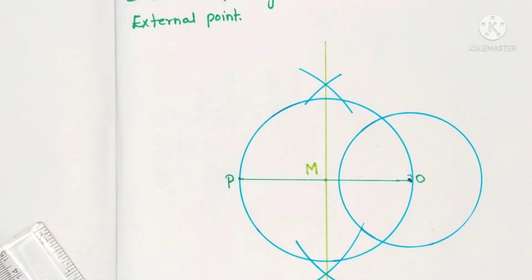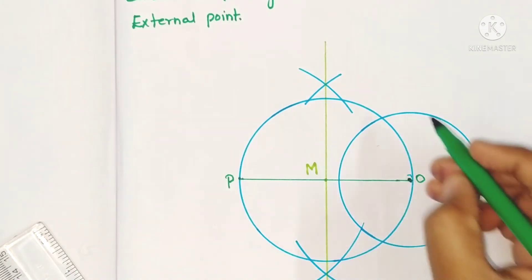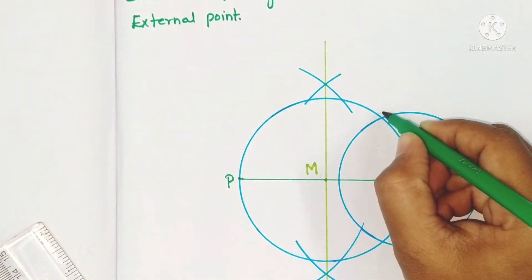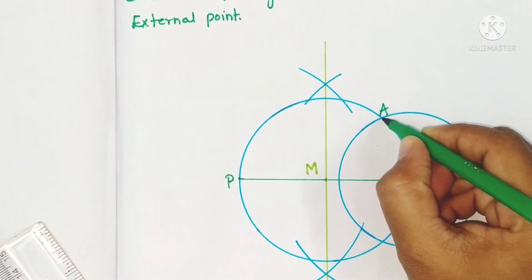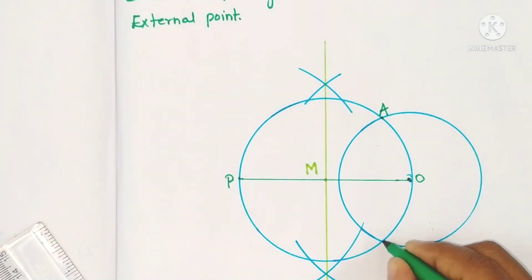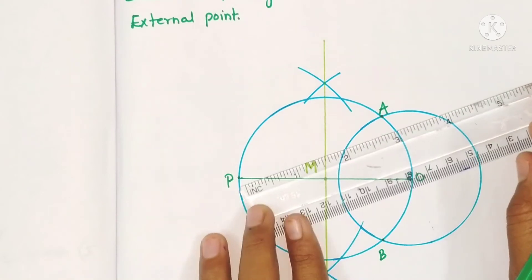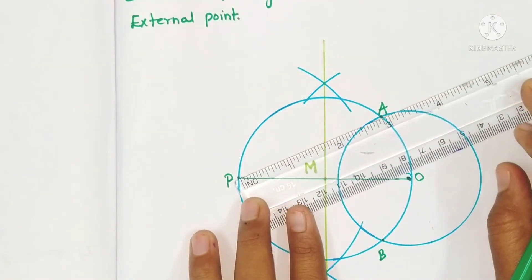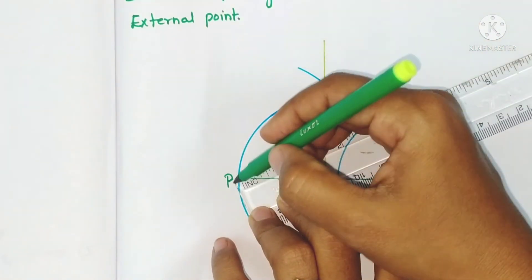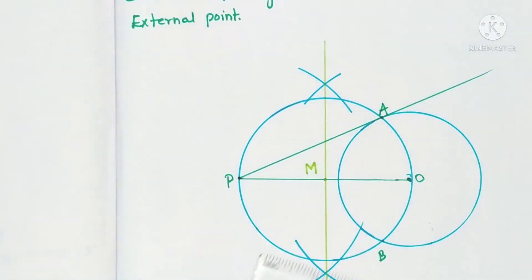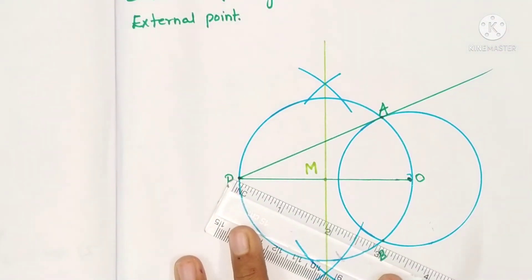Like this. See, the circle intersects the first circle at two points. So this is A and this is B. Now if we join PA and PB, these are the tangents of the circle.